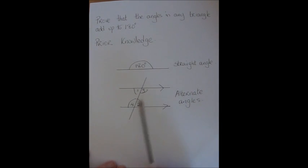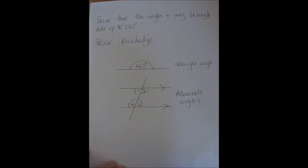When we have parallel lines and a line cutting the parallel lines, that line is called a transversal, there are eight angles formed. We are concentrating on the angles between the parallel lines, these four angles here.